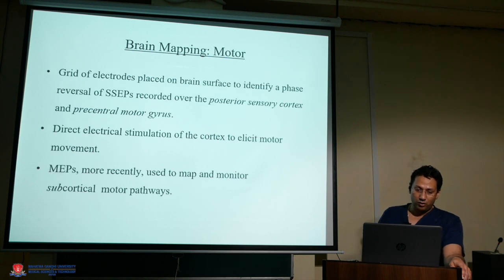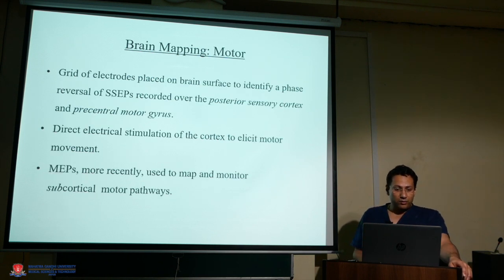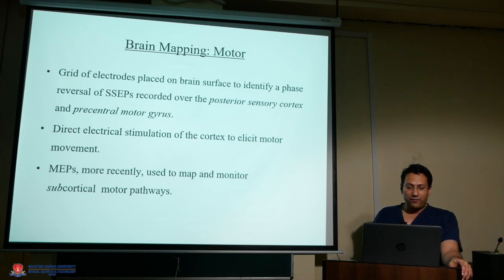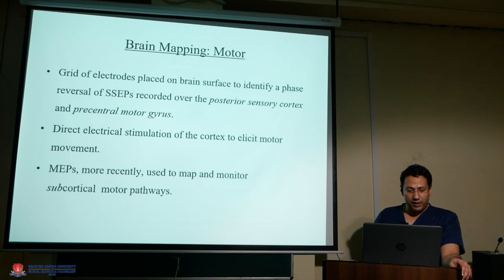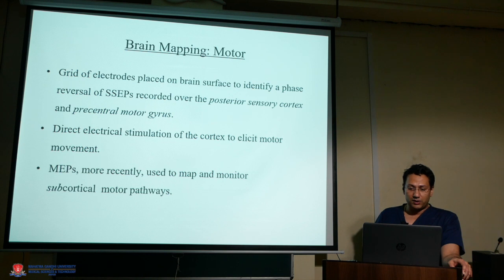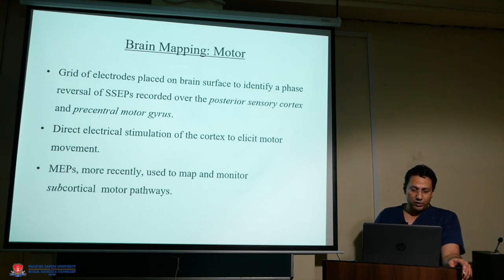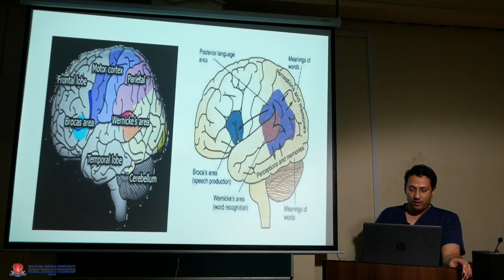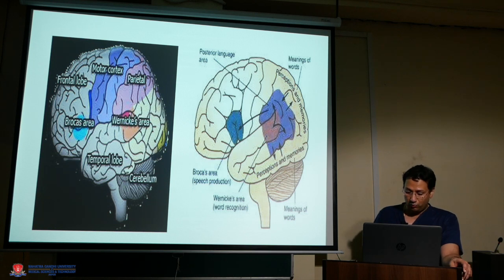In motor brain mapping, grids of electrodes are placed on the brain surface to identify phase reversal of SSEPs recorded over the posterior sensory cortex and precentral motor gyrus. Direct electrical stimulation of the cortex is used to elicit motor movement. Motor evoked potentials are more recently used to map and monitor subcortical motor pathways. This is the motor cortex in the parietal lobe and frontal lobe.